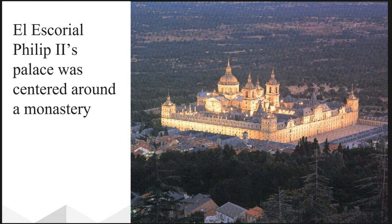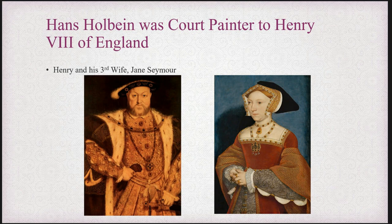Philip II's palace was centered around a monastery. We can also see the domes here, so that would be a carryover of Roman and Greek architecture. Hans Holbein was a court painter to Henry VIII of England, who we can actually see on the left. On the right, we will see his third wife, Jane Seymour. It's divorced, beheaded, died — so she just died, she didn't get murdered.